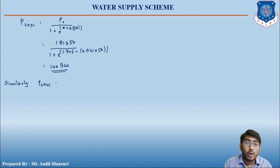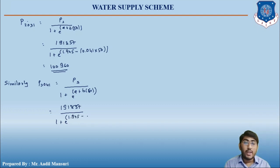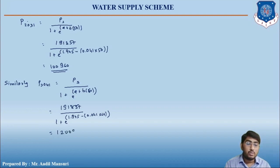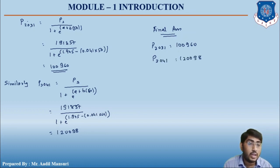Similarly, P2041 = Ps / [1 + e^(a + b×60)] = 191,857 / [1 + e^(1.945 − 0.041×60)], which comes out to be 120,980. So the final answers are: P2031 = 100,960 and P2041 = 120,980.